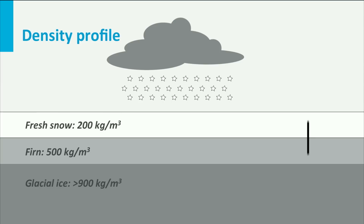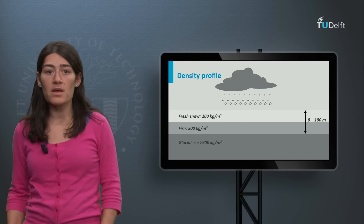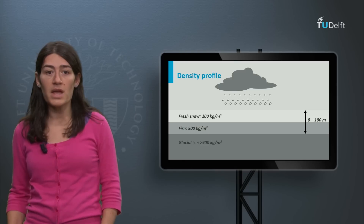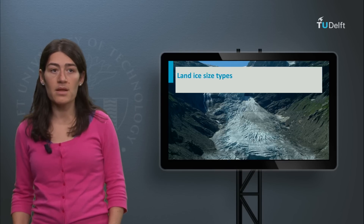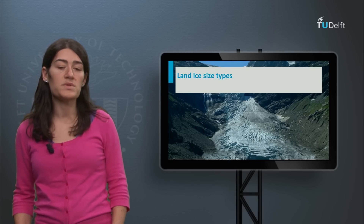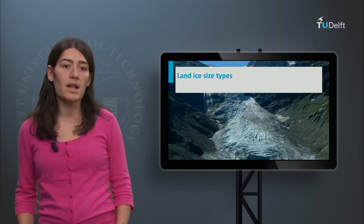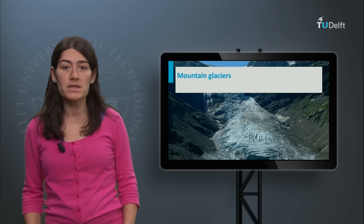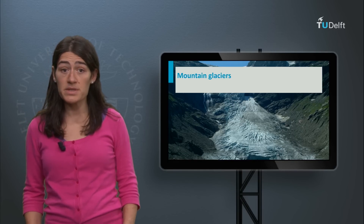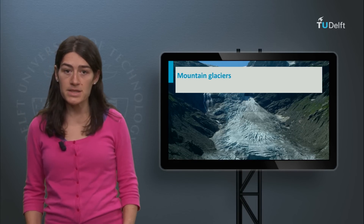The layers with densities between snow and ice are called firn. Refrozen melt water creates ice lenses at the surface or at depth. According to size, land ice is classified into mountain glaciers, ice caps, and ice sheets.